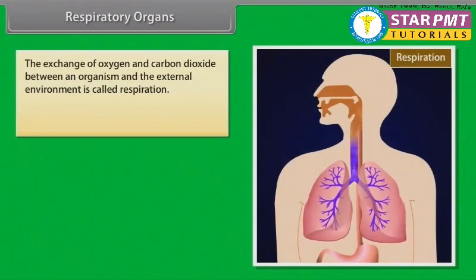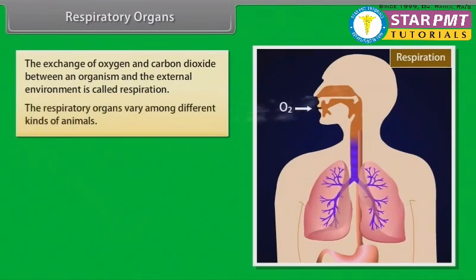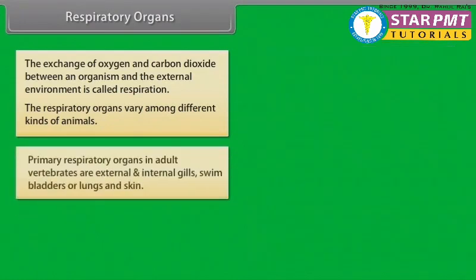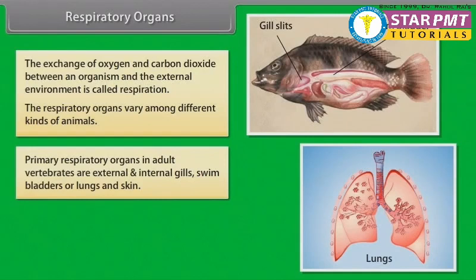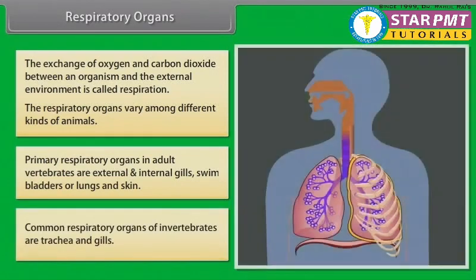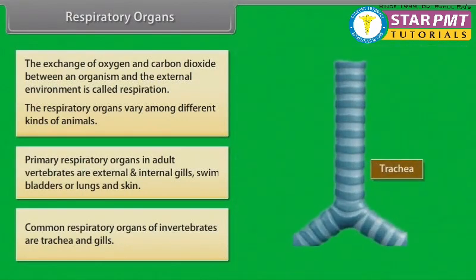Respiratory organs. The exchange of oxygen and carbon dioxide between an organism and the external environment is called respiration. The respiratory organs vary among different kinds of animals. Primary respiratory organs in adult vertebrates are external and internal gills, swim bladders or lungs, and skin. Common respiratory organs of invertebrates are trachea and gills.